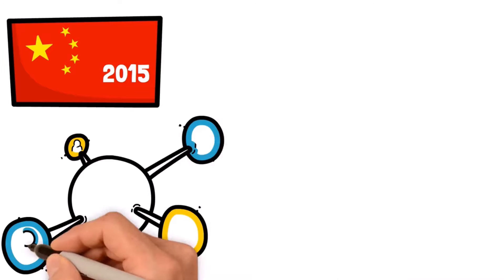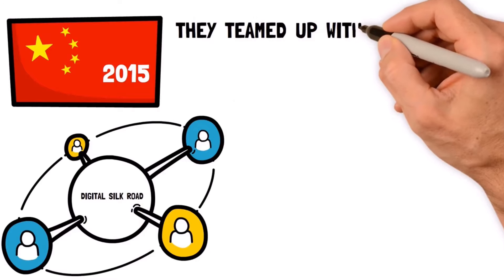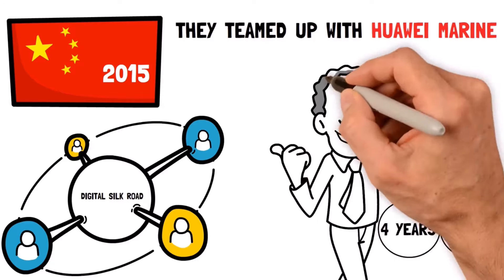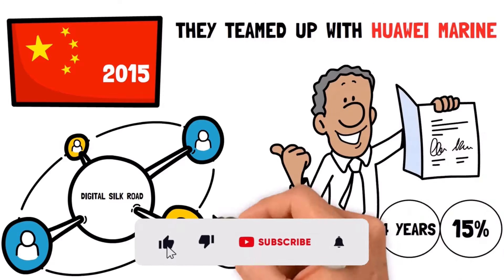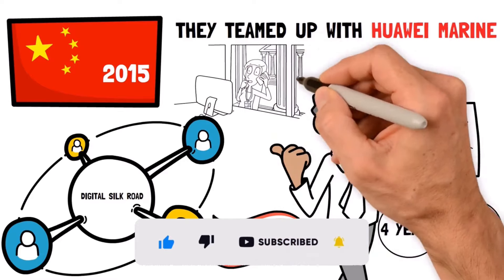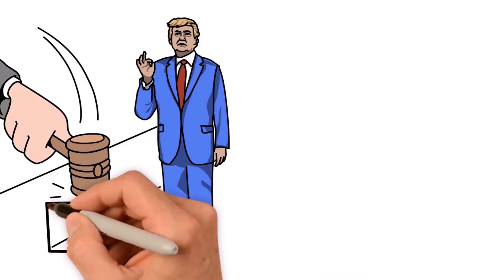By 2015, China started a project called the Digital Silk Road to make their network bigger. They teamed up with Huawei Marine, and in just four years, they got 15% of the whole world market for these cables. For the United States, this was like a wake-up call. It showed them that they needed to pay more attention to this stuff. The Trump administration got really tough on China.